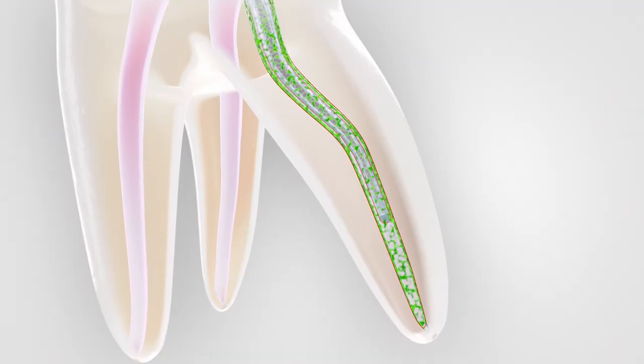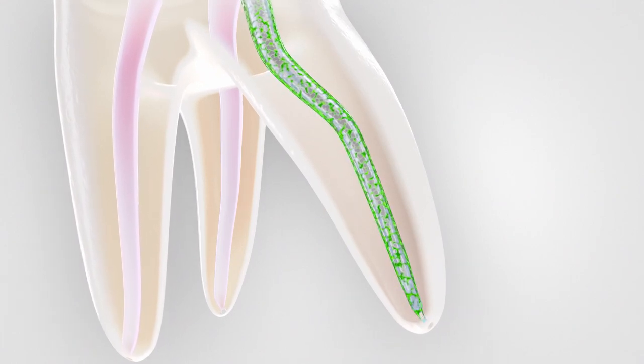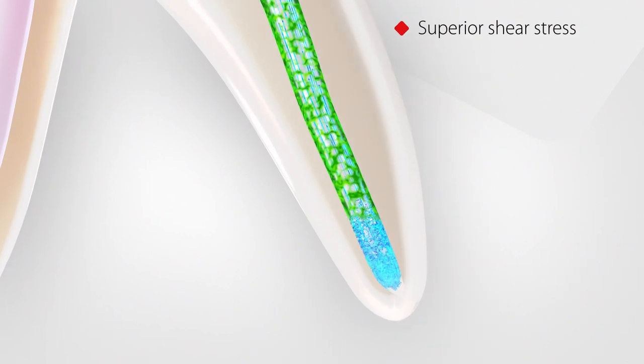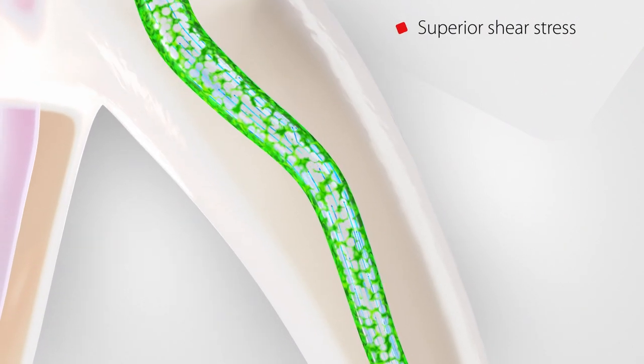The 4% tapered shape matches root canal preparation, unlike conventional metal needles. The higher solution flow rate and the reduced space around the needle significantly increase the wall shear stress along the root canal. The superior shear stress improves the cleaning efficacy and mechanically removes more residues such as debris, smear layer, and biofilm from the root canal walls.